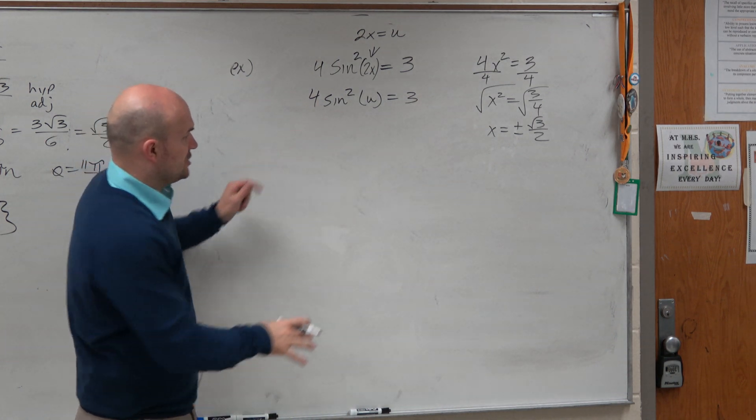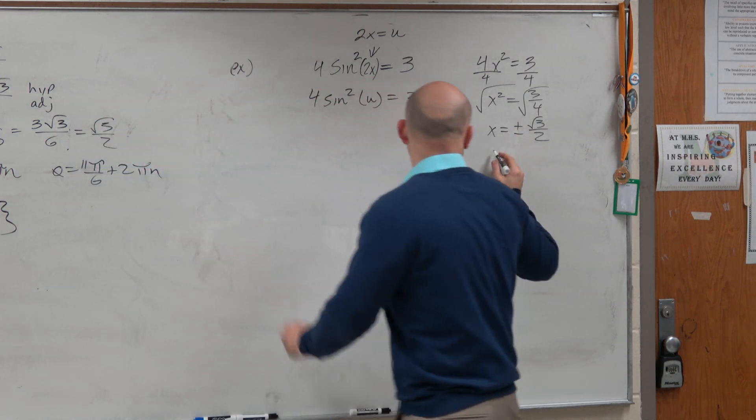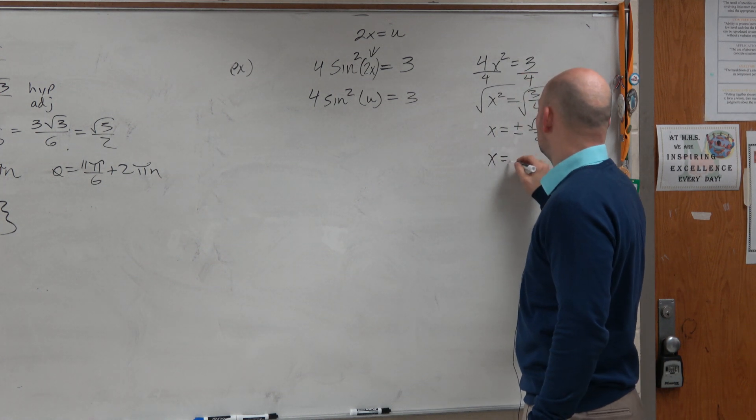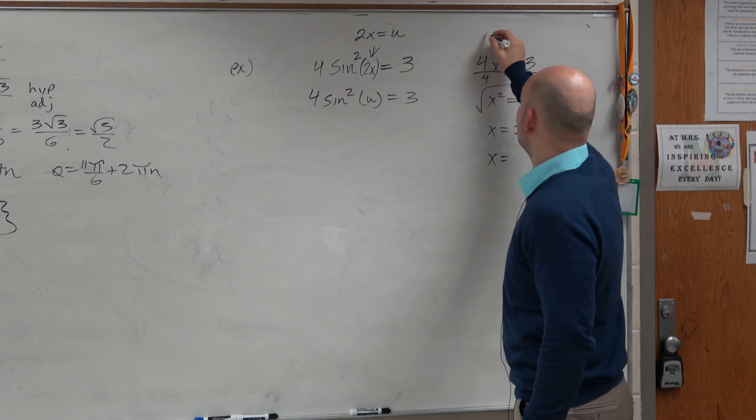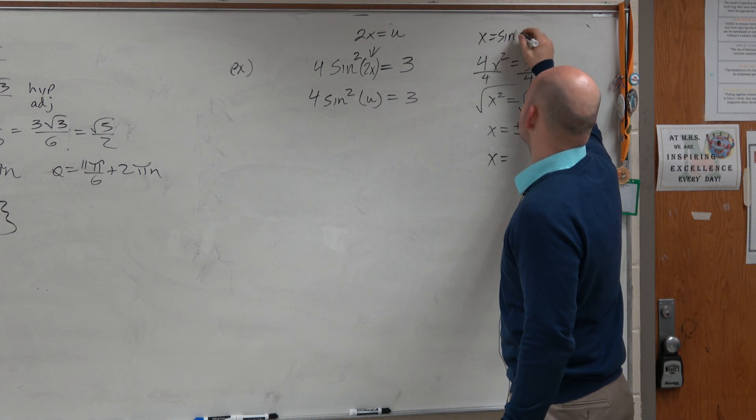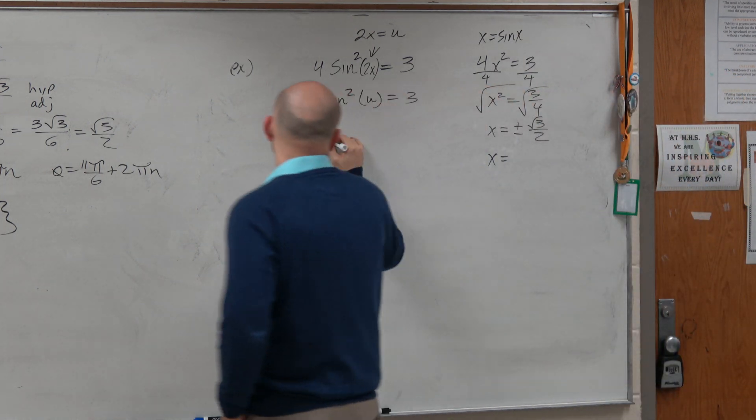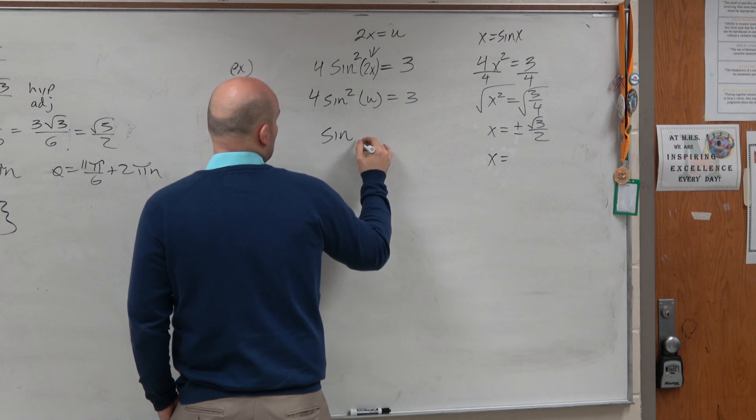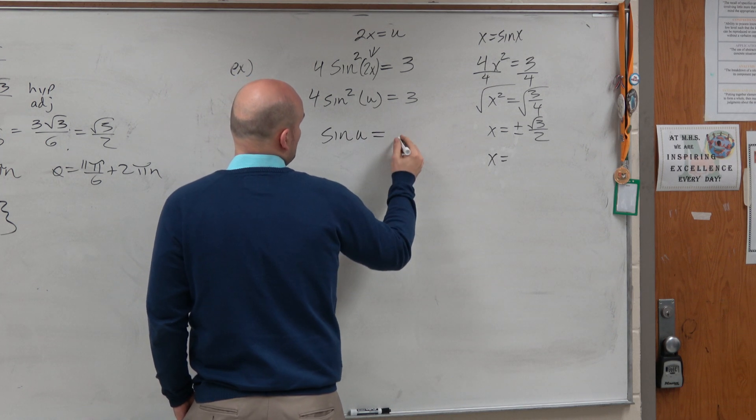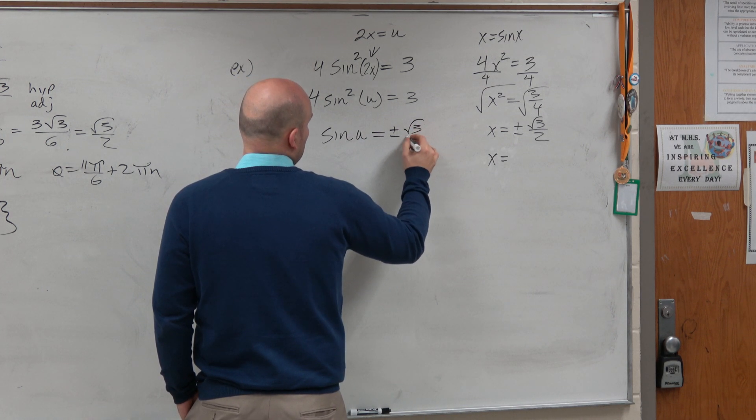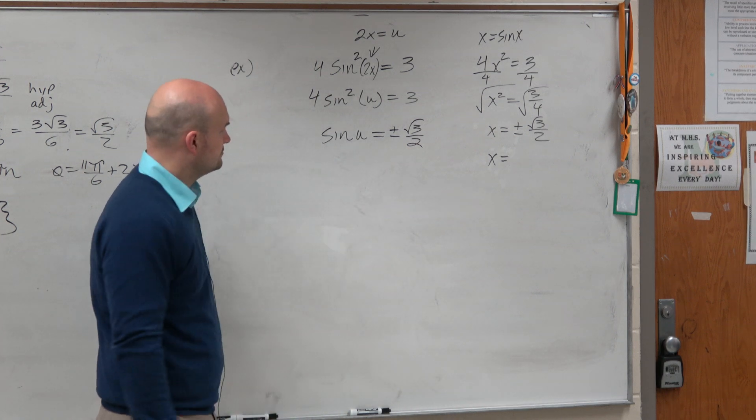But let's just let this expression 2x equal u so we can solve this without kind of being distracted. So I'm going to do my same algebraic process. And basically, I am going to let x equal sine of x. So can I basically now just say sine of u is equal to plus or minus the square root of 3 over 2.